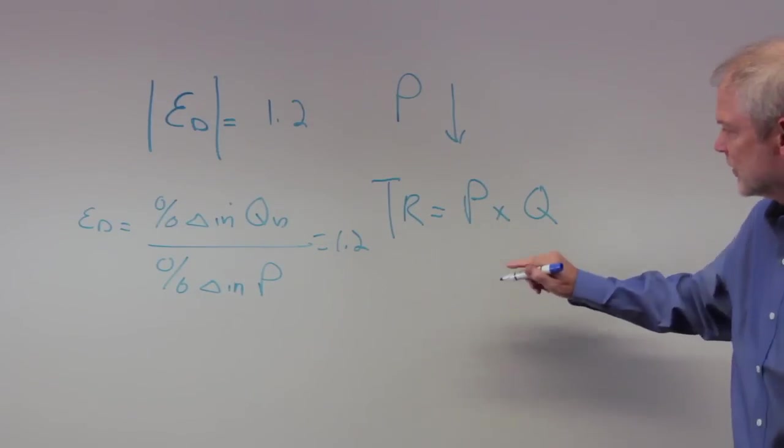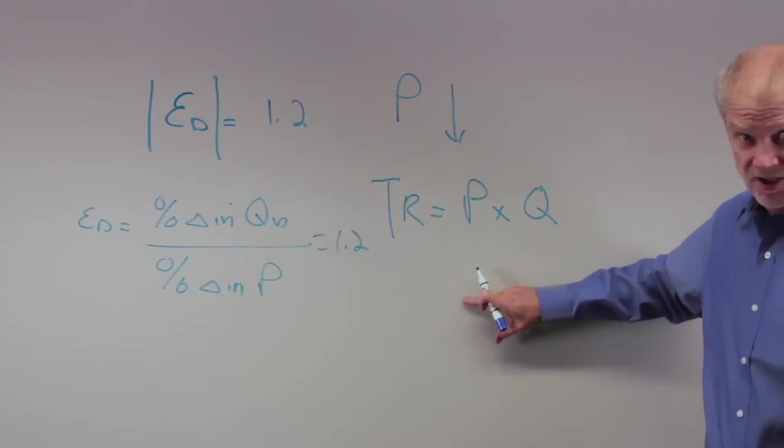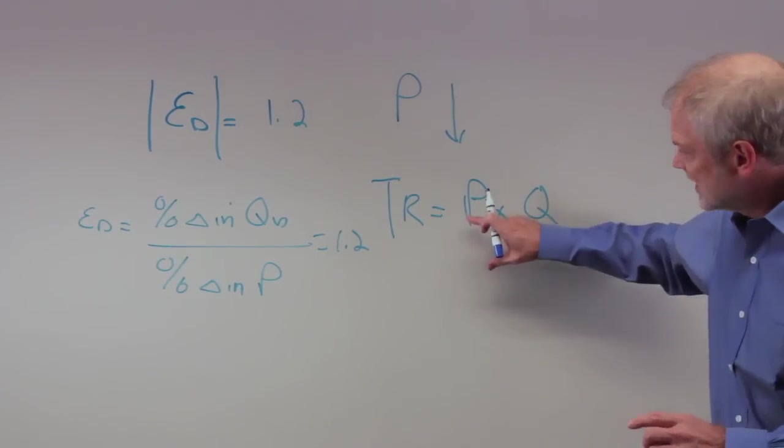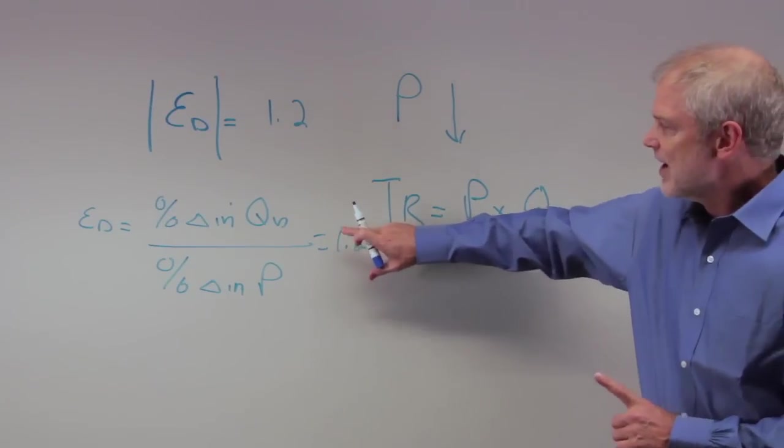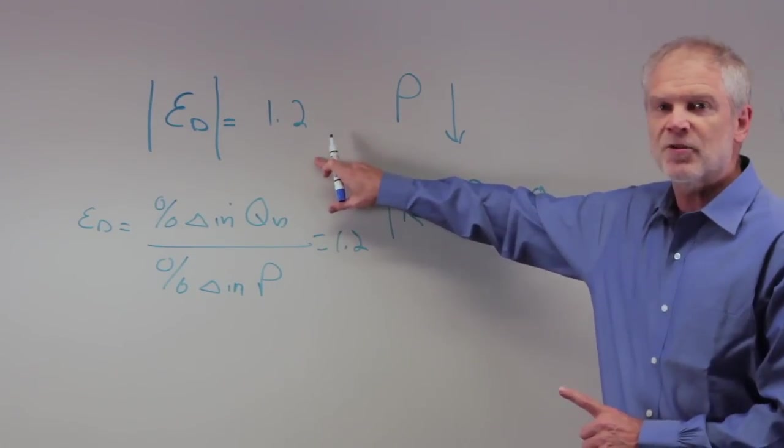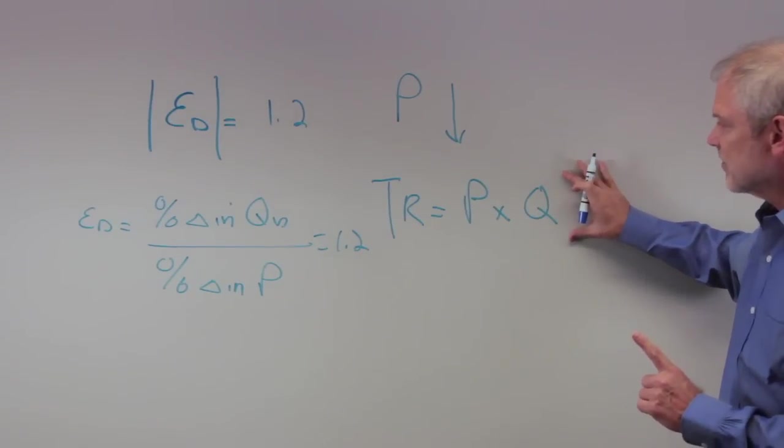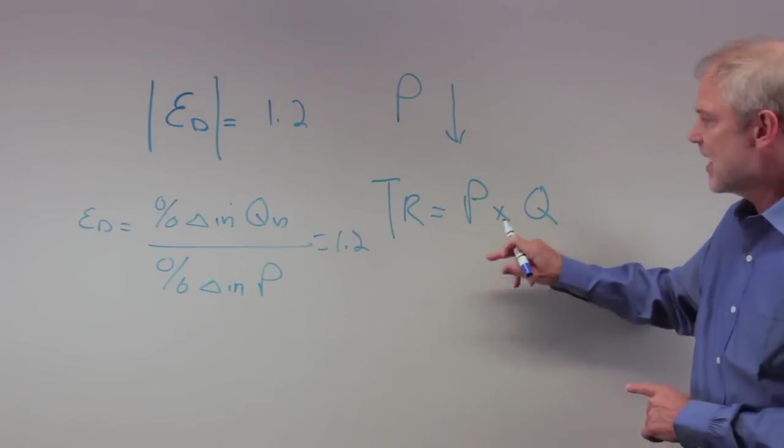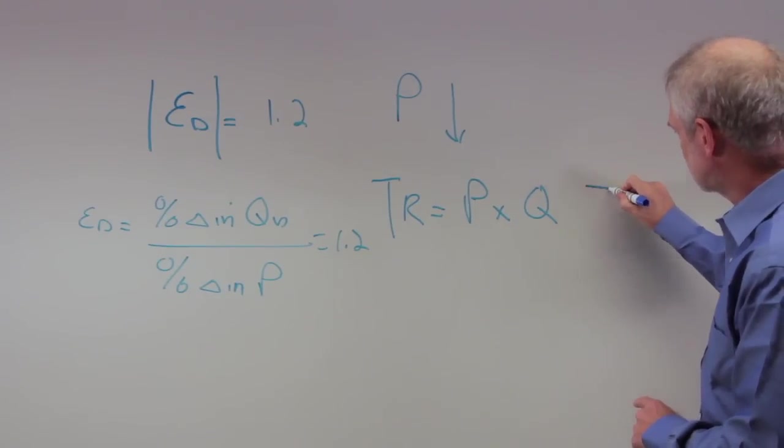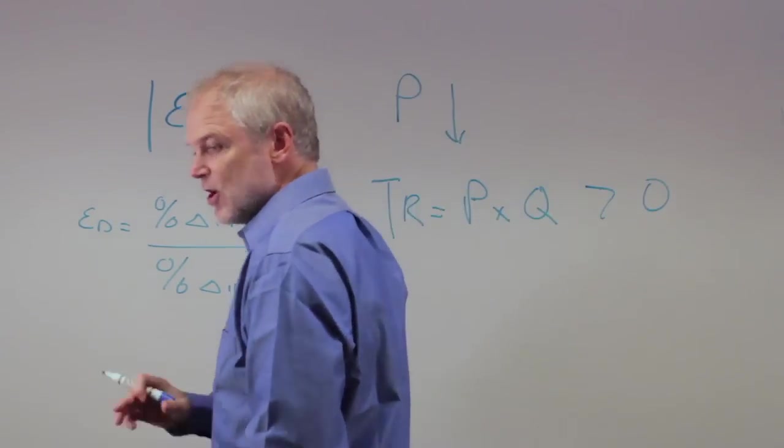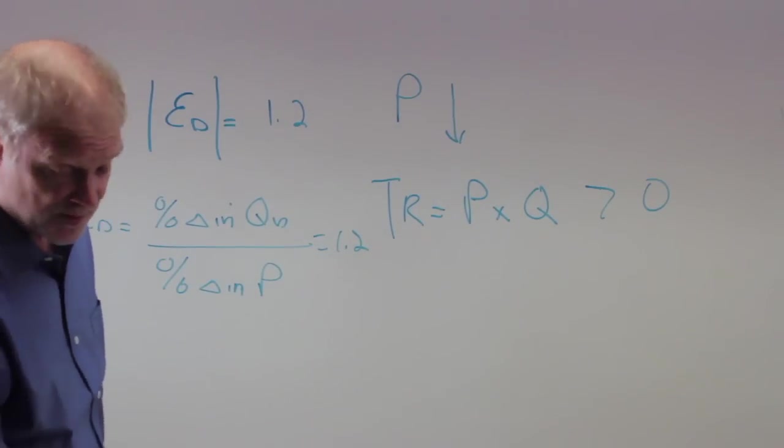Back to the problem. What this firm has done is it's decreased price by some amount, call it 10% just to keep this example going. If it decreases price by 10% and the elasticity is 1.2, then we know the quantity demanded is going to increase by 12%. In other words, the increase in quantity demanded is going to more than offset the decrease in price, and therefore revenue is going to increase. The first one is correct. A is right. So let's go to the next one.